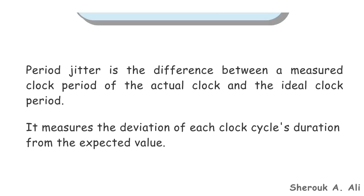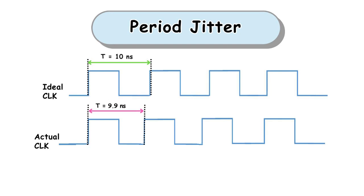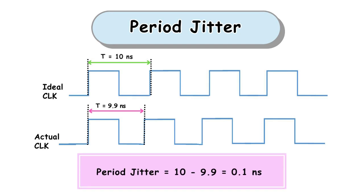Let's explain with an example. As shown, the ideal clock period is 10 nanoseconds. However, due to the deviation of the actual clock edge from its ideal position, the actual clock period becomes 9.9 nanoseconds. Therefore, the difference between the measured clock period of the actual clock and the ideal clock period results in a period jitter of 10 minus 9.9 equals 0.1 nanoseconds.